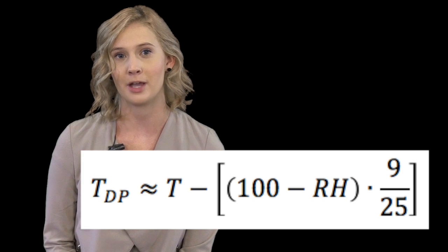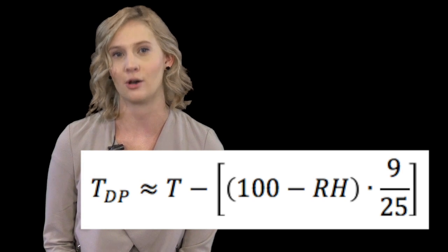The wet bulb temperature is the temperature air would have if it were cooled to saturation through evaporation. You can use the dry and wet bulb temperature to find the humidity, and from there dew point can be calculated.